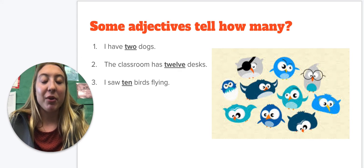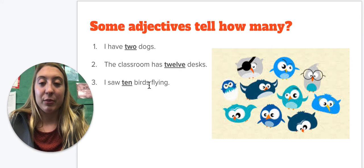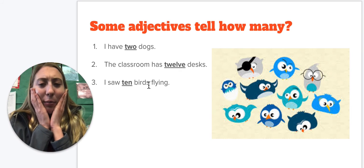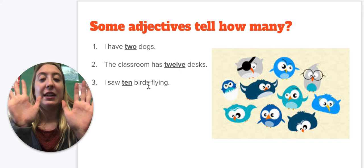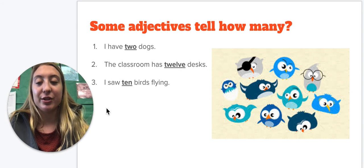I saw 10 birds flying. So now birds is our noun. It's an animal. Now how many birds did you see flying? Ten. So that is going to be our adjective, describing how many birds you see.